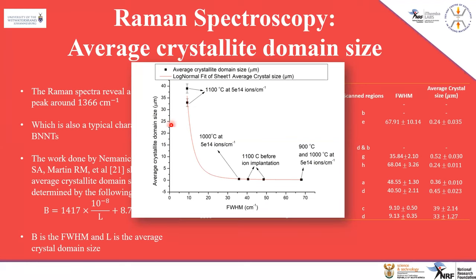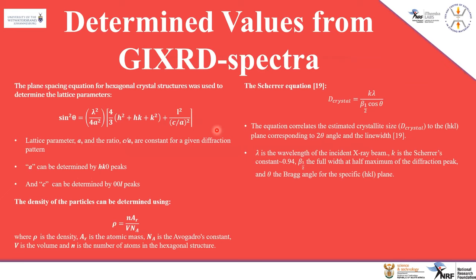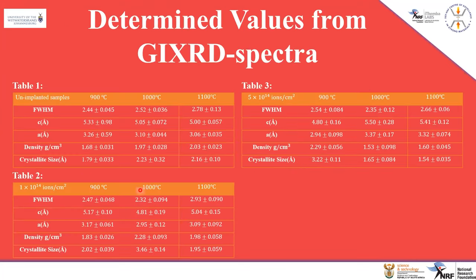For the XRD spectra, I used the Bragg spacing equation to determine the lattice parameters and the Scherrer equation to determine the crystallite size. These are the tables of determined and calculated values from the XRD spectrum.